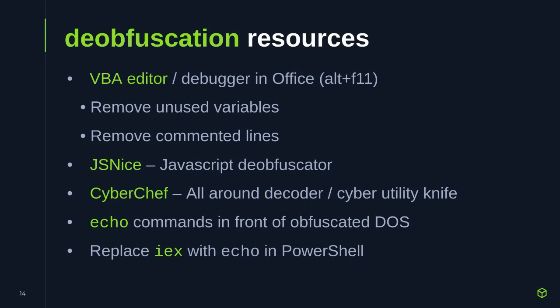Some deobfuscation resources that are really useful: the VBA editor — you can open up the document, look at the code itself, delete commented lines or garbage variables, or if you can find where the Shell command is being called, put a breakpoint there and run to it, then print out what the variables look like and skip through all the obfuscation to see the results of what's about to be run. If you end up with JavaScript, JS Nice is a really nice deobfuscator and beautifier. If you don't like JS Nice, there are 30 others — just Google 'JavaScript deobfuscator.'